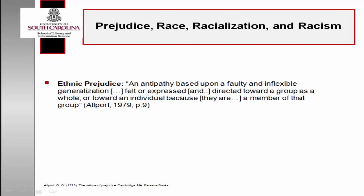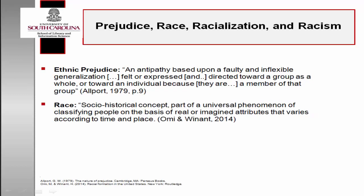Psychologist Gordon Allport developed the Allport Scale of Prejudice in 1954 to measure the manifestation of prejudice in society. He defined ethnic prejudice as an antipathy based upon a faulty and inflexible generalization felt or expressed and directed toward a group as a whole or toward an individual because they are a member of that group. Perceptions of race, like physical ability, are a result of social construction. Sociologists Michael Omi and Howard Winnett defined race as a socio-historical concept, part of a phenomenon of classifying people on the basis of real or imagined attributes that vary across time and place.